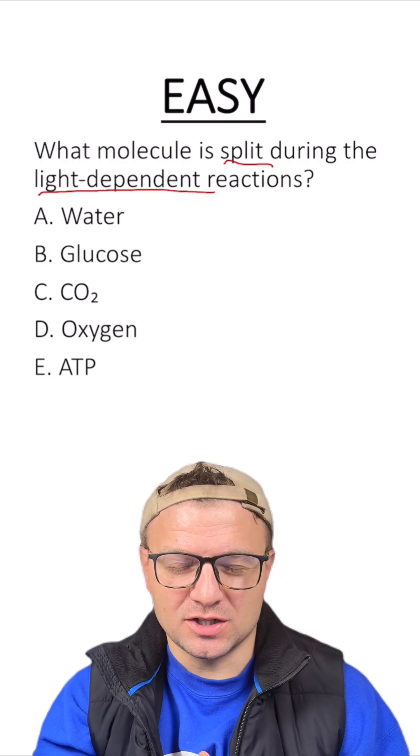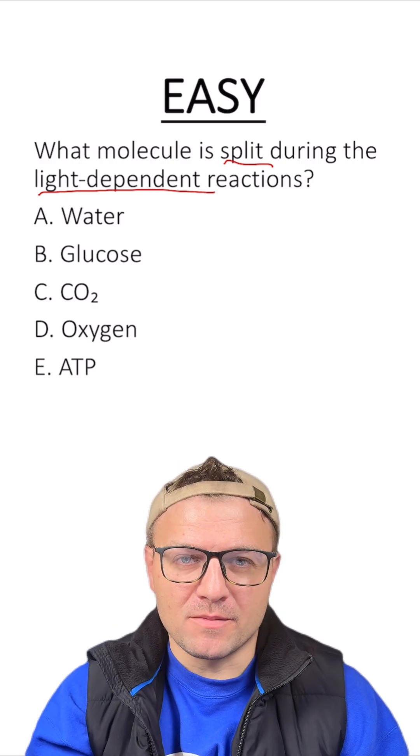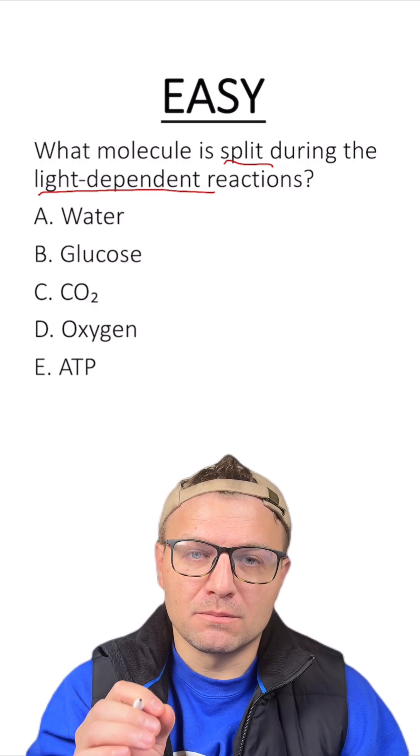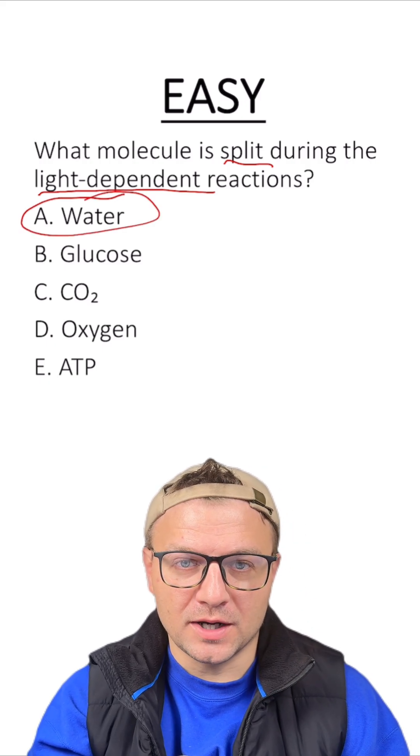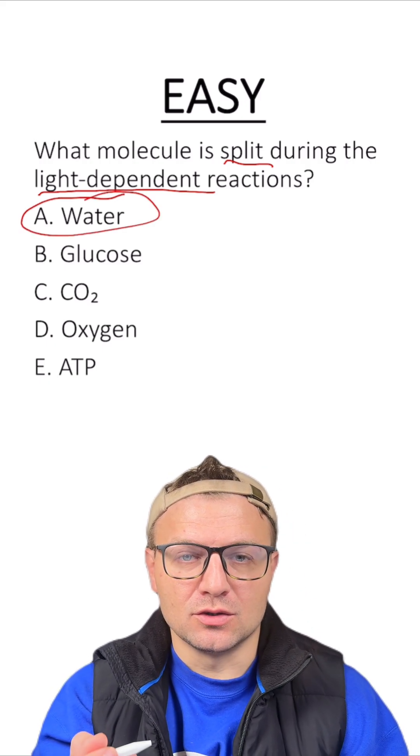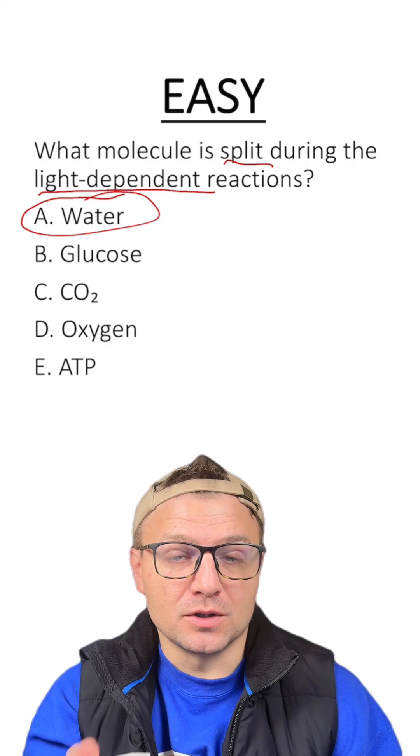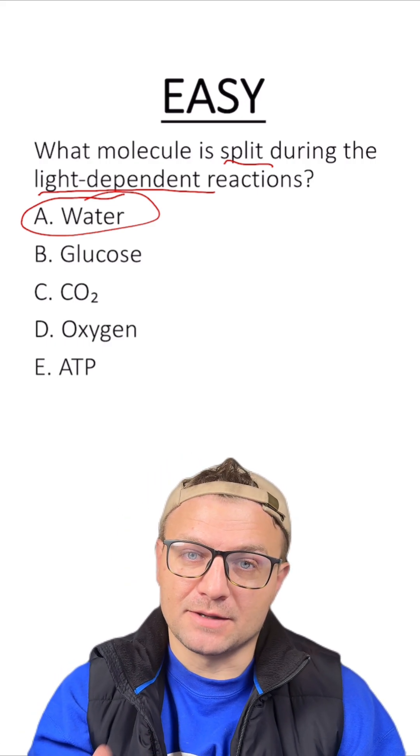The reason why this is an easy question is it's just basically asking, have you memorized what specific molecule breaks down at Photosystem II? And that molecule is water. Water breaks down, donates the electrons to Photosystem II. It also produces hydrogen ions and oxygen as a byproduct.